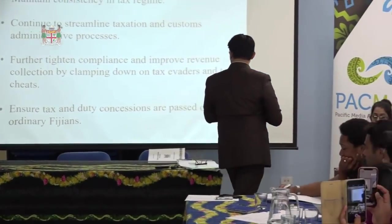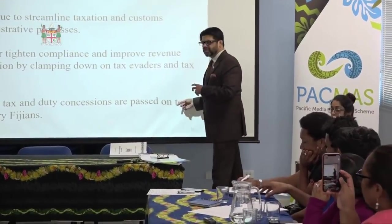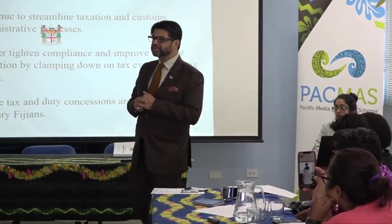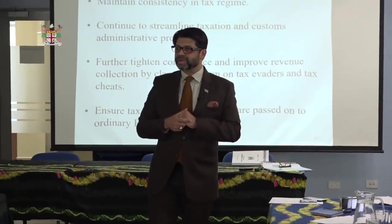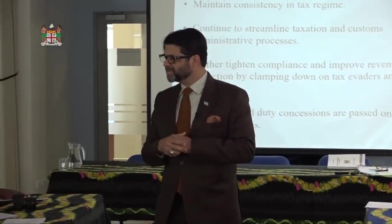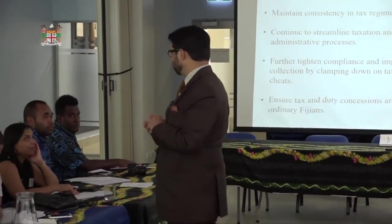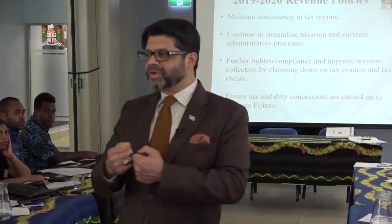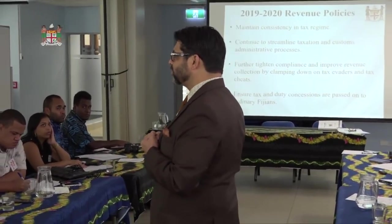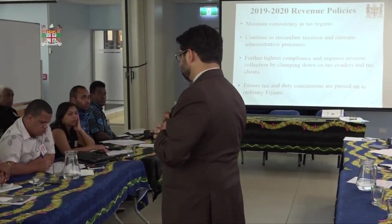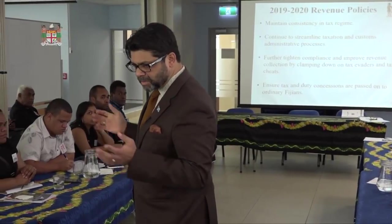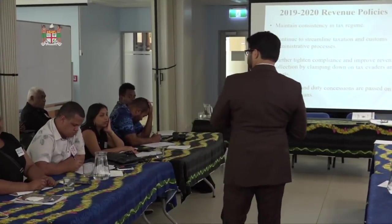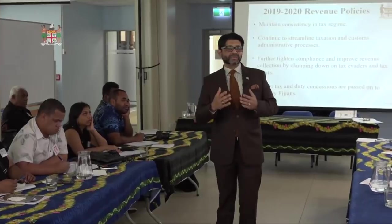Ensure tax and duty concessions are passed on to ordinary people. We reduced duty on baby products from 32% to 5%, and the price went up — the only supplier was eating it all up. So we've foregone revenue with the view that consumers will pay less, but people did not pass it on. We have a young population that makes lots of babies, so we want the cost of child-rearing to be reduced. We're putting in place laws and F-Triple-C has to do a lot of work in that area.